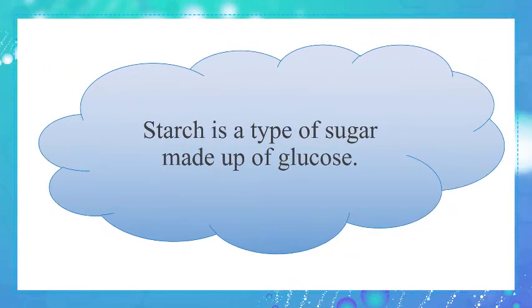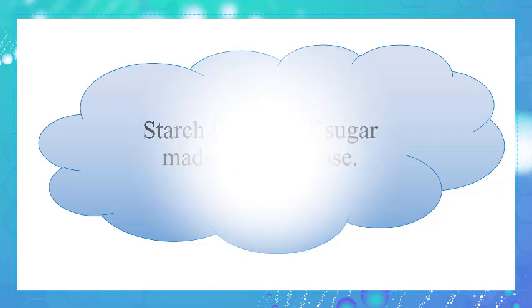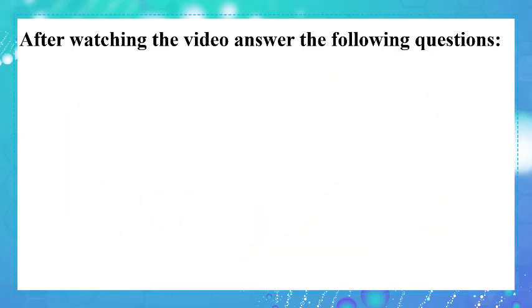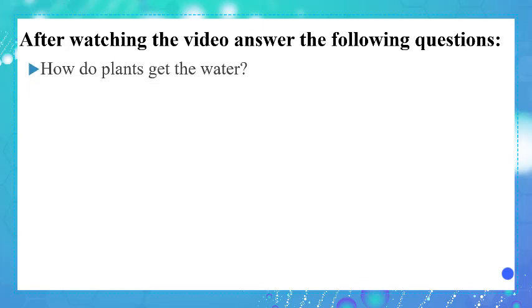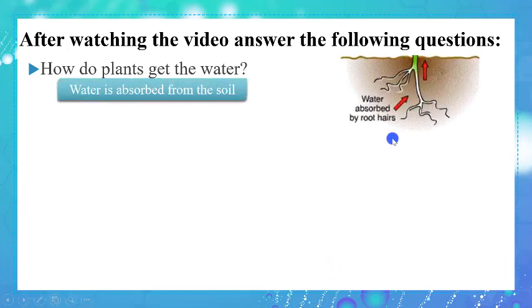Note that starch is a type of sugar made up of glucose. After watching the video, answer the following questions. How do plants get water? Water is absorbed by the root hairs. These are the root hairs found in the root — they absorb water and mineral salts from the soil.